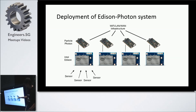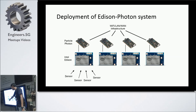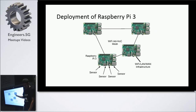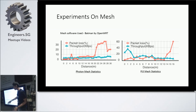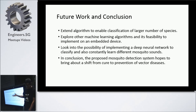This is how we deployed the system: in one setup the Particle Photon maintains the mesh while the Intel Edison handles the sensor — multiple sensors attach to the Edison which connects to the Photon. In the other setup, the Raspberry Pi 3 uses its own mesh directly. In terms of throughput, there is significant packet loss as distance increases, so there's only so much distance we can cover.